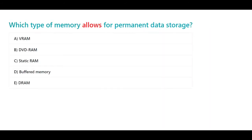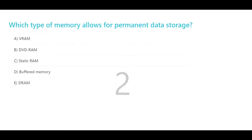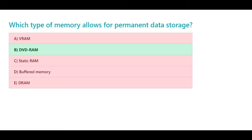Which type of memory allows for permanent data storage? A. VRAM. B. DVD RAM. C. Static RAM. D. Buffered memory. E. DRAM. The correct answer is B. DVD RAM.